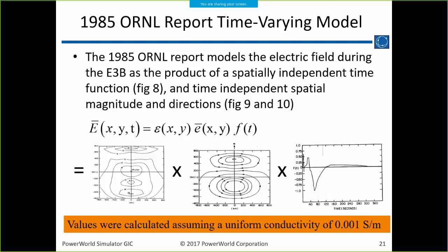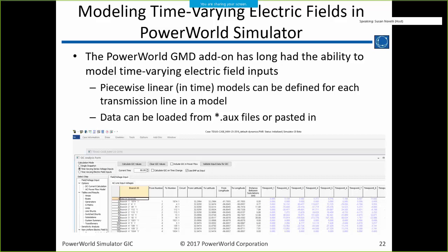The Oak Ridge report says to model the electric field caused by an EMP by taking the E3B contour chart, multiplied by the direction, multiplied by f(t) — the time-varying function. That's how we model it in PowerWorld. We treat E3A as going on for about the first 10 seconds, then E3B follows using those waveforms. PowerWorld has long had the ability to model time-varying electric fields, placed in for standard GMD analysis.